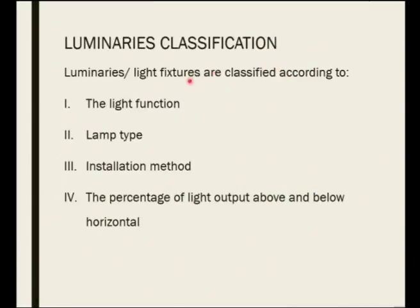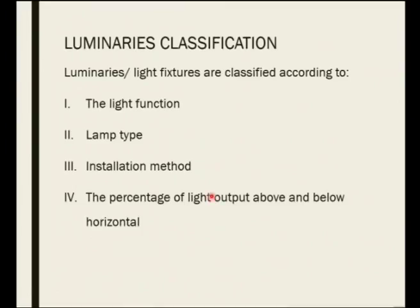Luminaires are the light fixtures — the housing, the bulb, everything put together. They are classified based on the function of the light, the type of lamp, the installation method, and the percentage of light output — whether light is going above or below. The lamp type was covered in the last lecture (incandescent and electric discharge lamps), and the installation method is what we just saw regarding how lights are fixed. Now we look at light function and the percentage of light output.